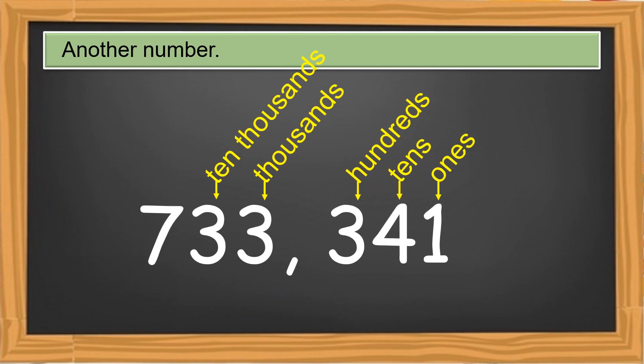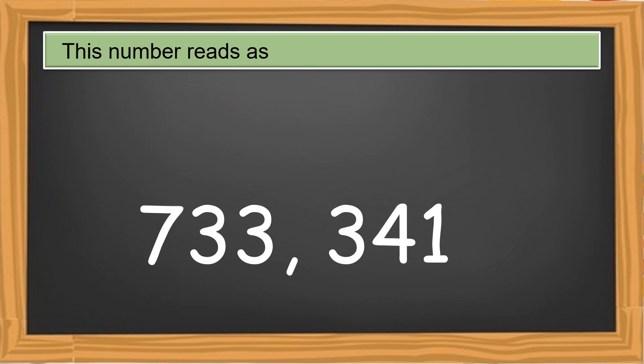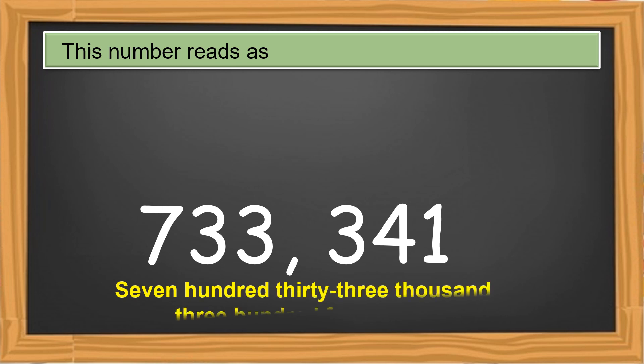Another number. There's an added place value from the previous example — this number is in the hundred thousands. This number reads as 733,341.